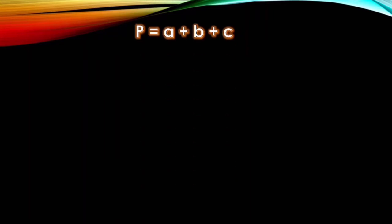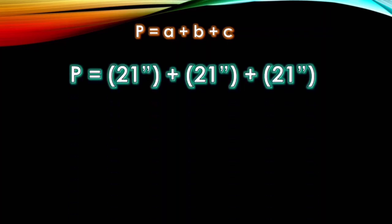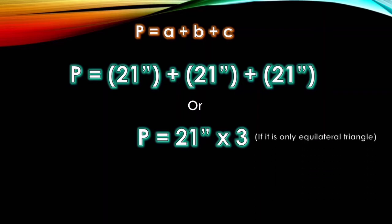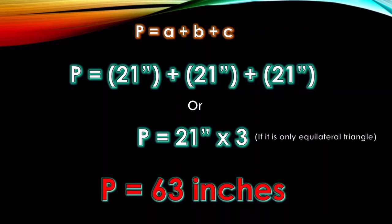Let's try to solve the perimeter of the triangle using the formula earlier. The given is 21 inches and each side also has 21 inches. That is why, P is equal to 21 inches plus 21 inches plus 21 inches. Or, if we want to simplify this equation, you can use P is equal to 21 inches times 3. Why? Because their lengths are all equal and the triangle has three sides. But the only condition you can use this is if the triangle is only equilateral triangle. So, be careful when you are going to use this. The answer, the perimeter is 63 inches.